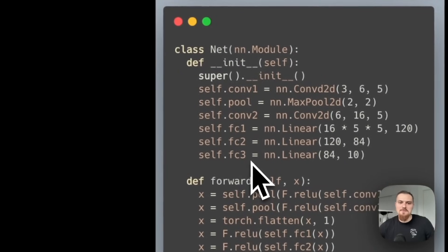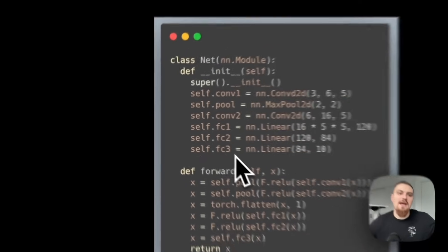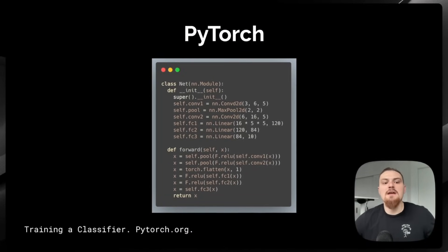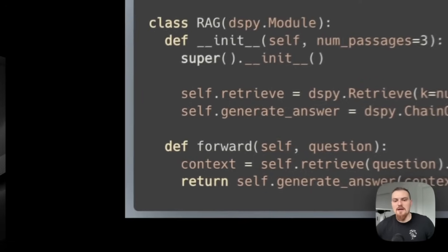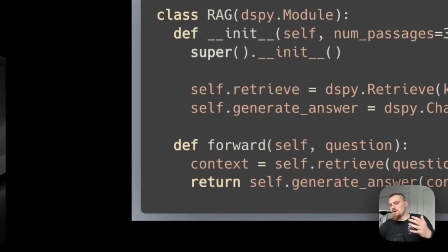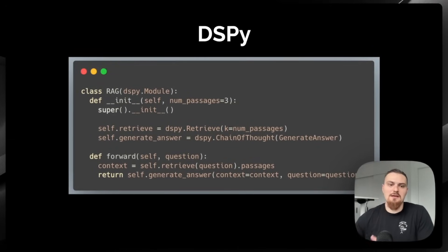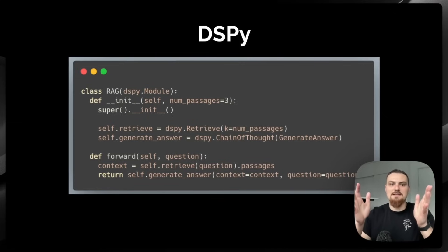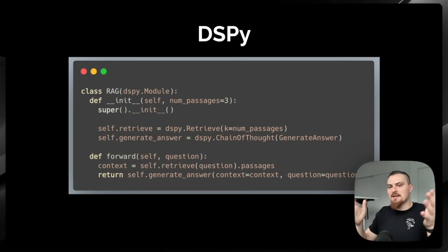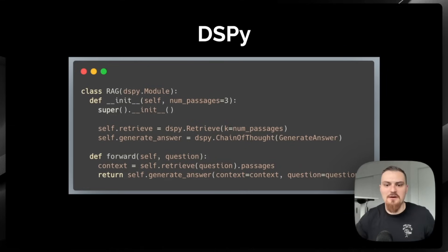Depth in neural networks describes having, say, eight layers of transformers. Similarly in DSPY, you might have eight layers of write a story, edit the story, parallelize that and have a committee reviewing the story. That kind of adding depth, adding components to your program, and the connection with deep learning and neural network layers is just super fascinating.